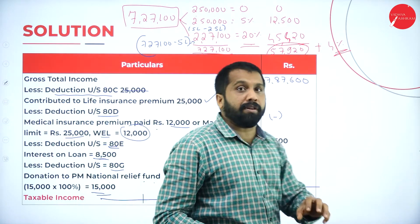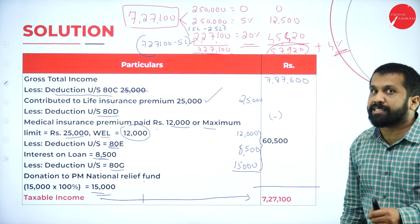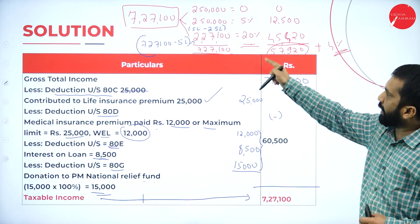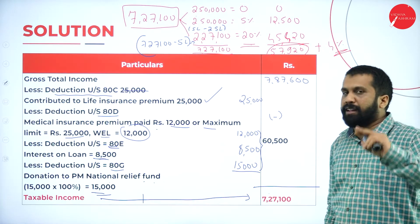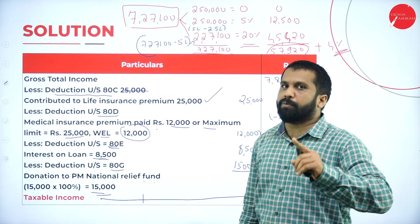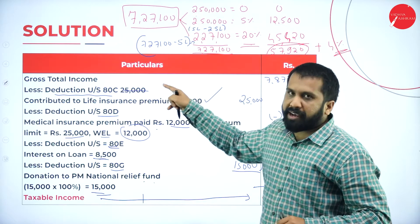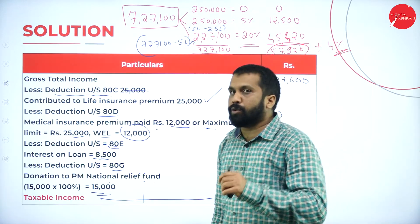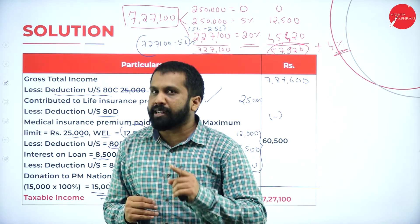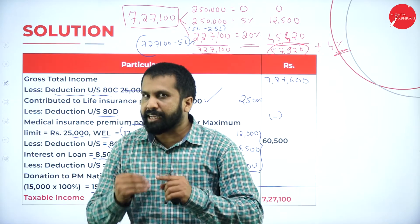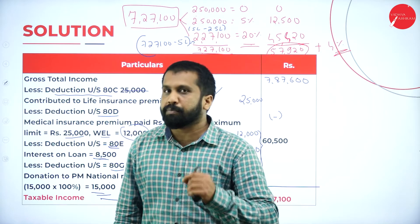Up to the taxable income calculation, we call it computation of taxable income. The tax slab calculation is called computation of tax. Since taxable income 7,27,100 is above 5,00,000, rebate is not applicable. Rebate is available only if taxable income is less than 5,00,000.